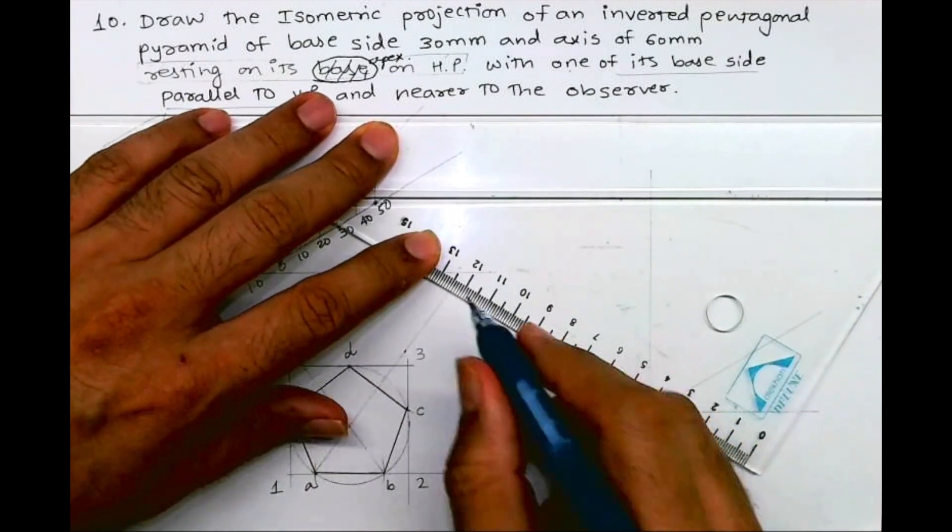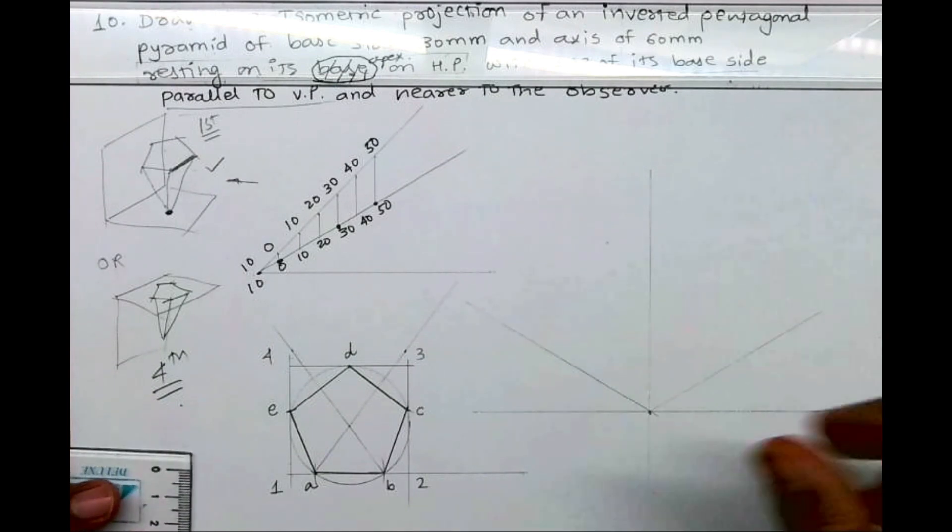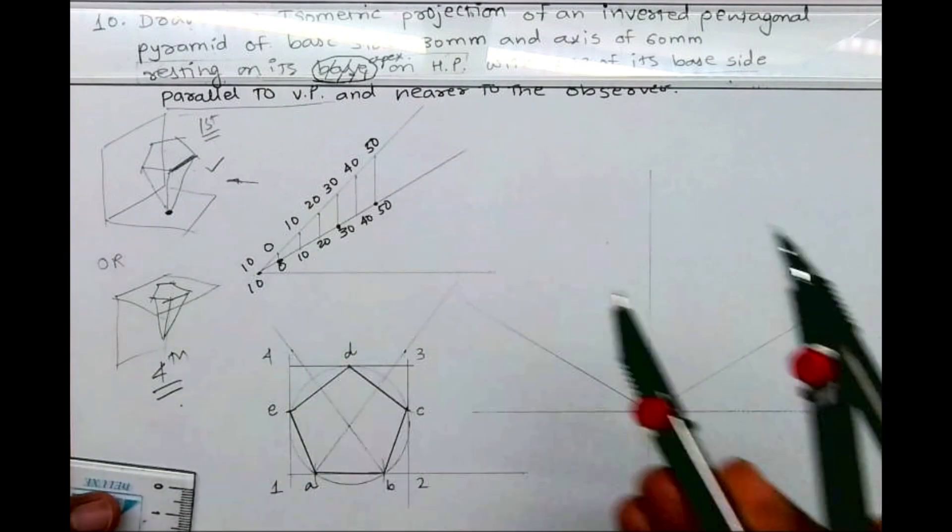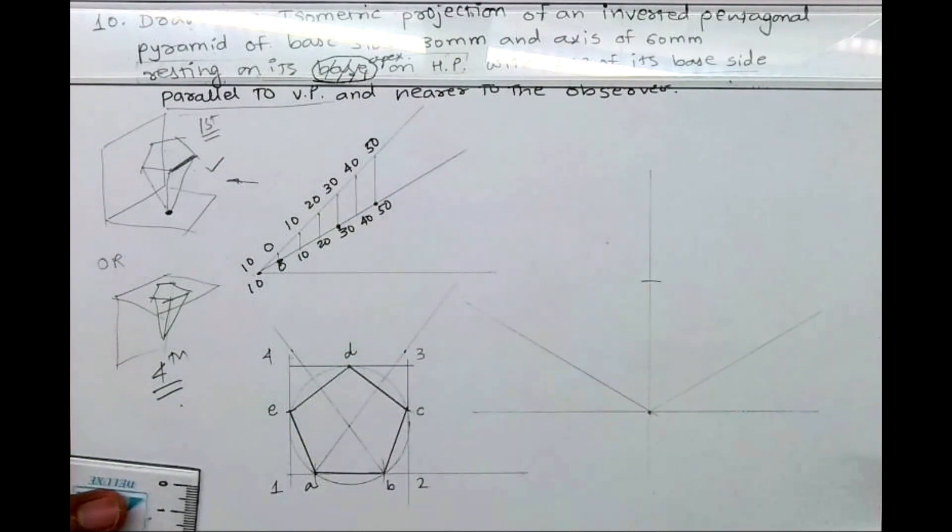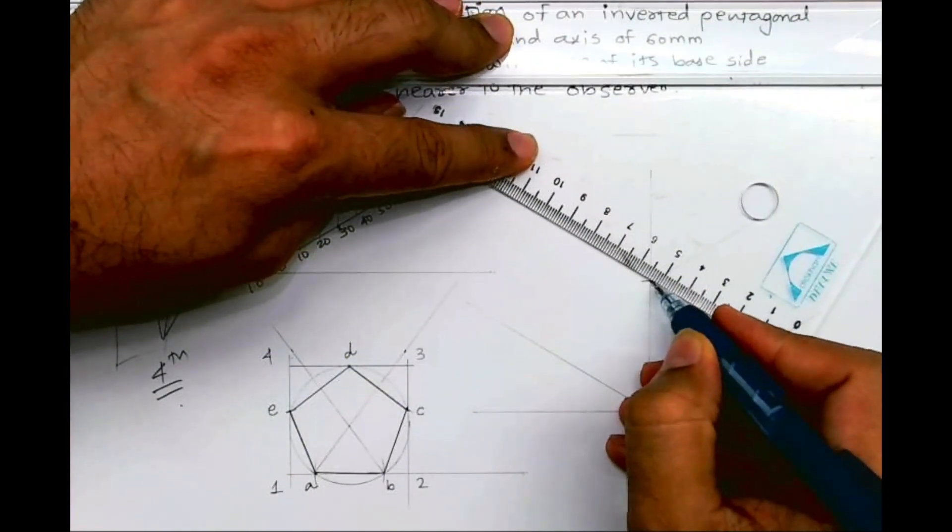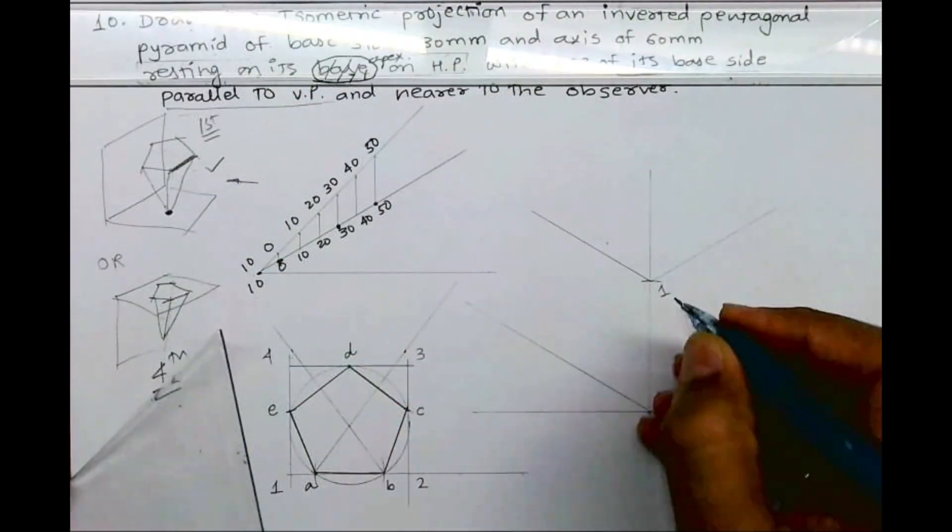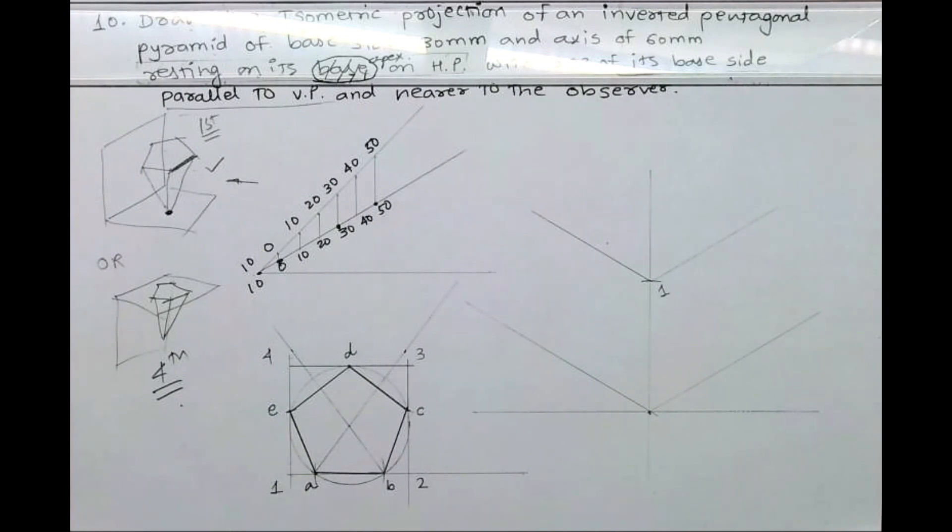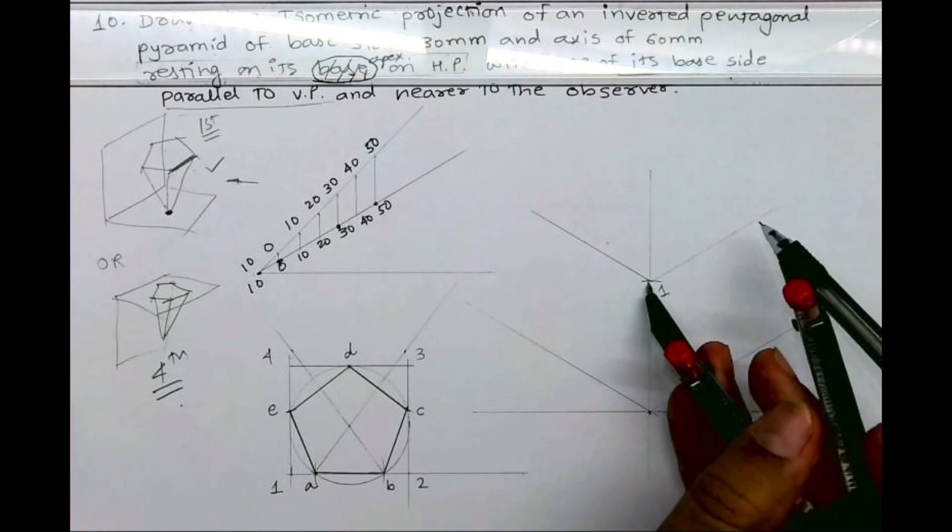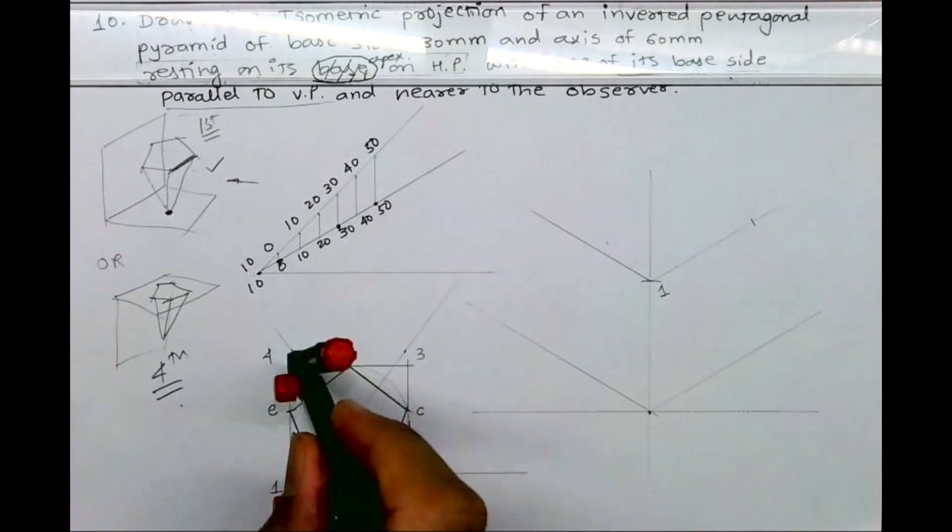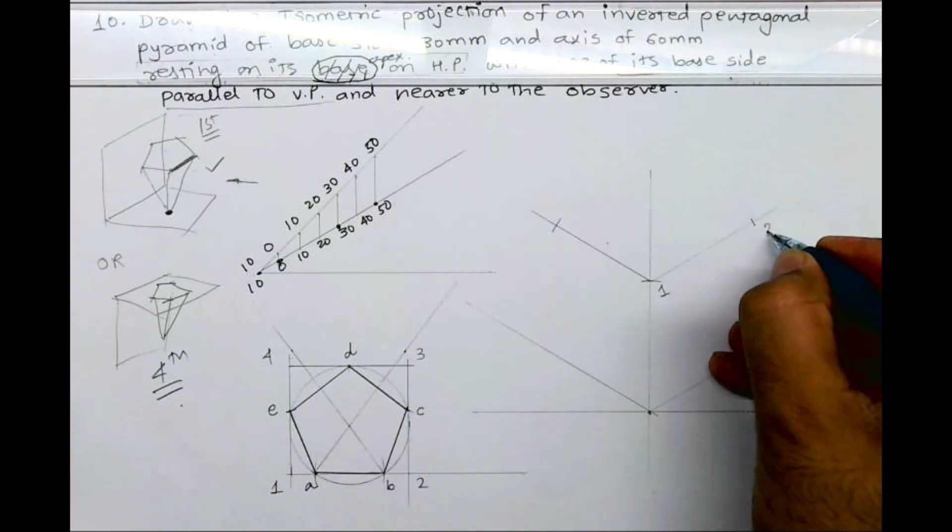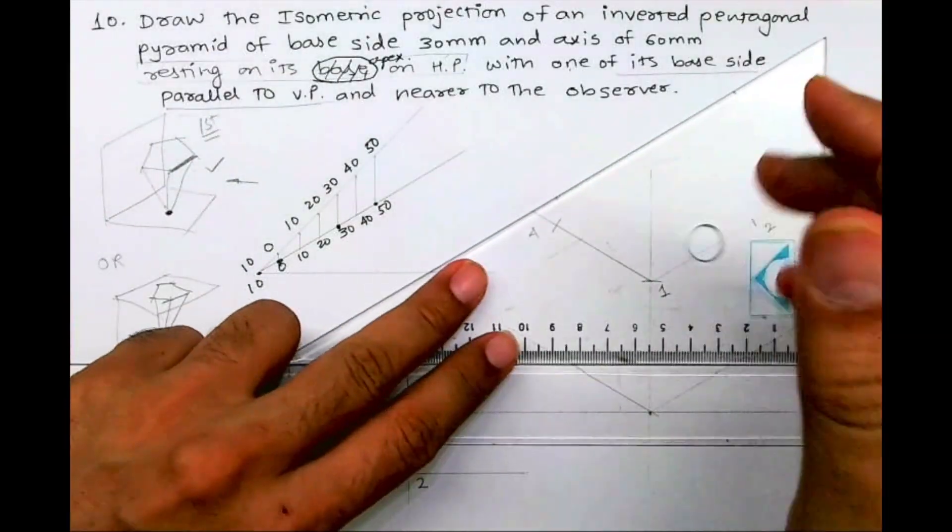Height is 60 so we can mark height 60. This is 1-1 to 2. Now we'll mark 1 to 2 and 1 to 4. Now we are doing this at the top why? Because it is inverted, so pentagon will come at the top. So we'll draw 1, 2, 3, 4 box on the upper side.